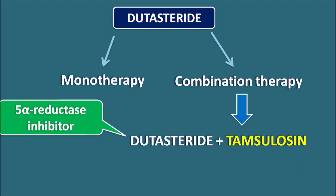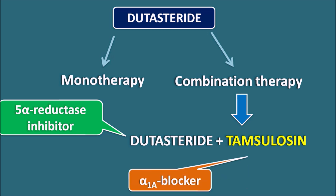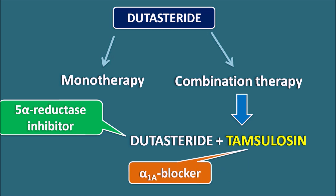Dutasteride is a 5-alpha reductase inhibitor which inhibits the activation of testosterone, thereby inhibiting androgenic activities. Tamsulosin is an alpha-1A blocker that produces relaxation of the prostate tissue. This combination can also be used to treat benign prostatic hyperplasia.